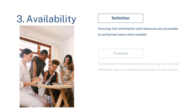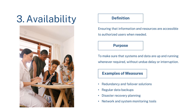Availability — definition: ensuring that information and resources are accessible to authorized users when needed. Purpose: to make sure that systems and data are up and running whenever required, without undue delay or interruption. Examples of measures include redundancy and failover solutions, regular data backups, disaster recovery planning, and network and system monitoring tools.